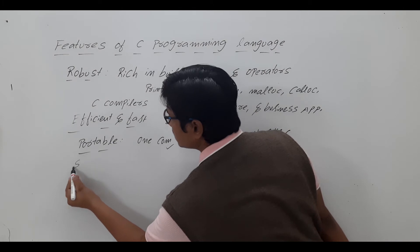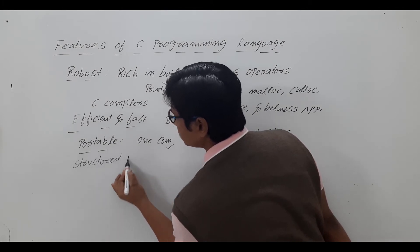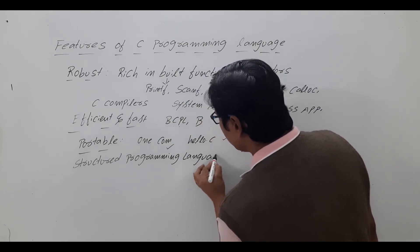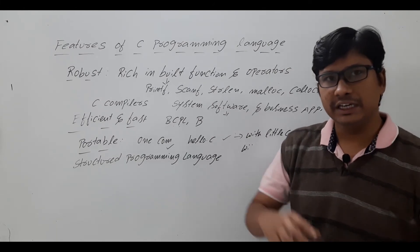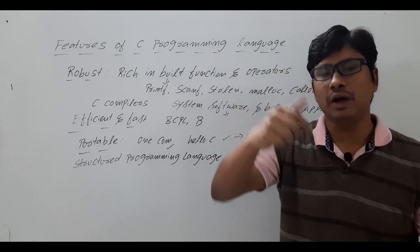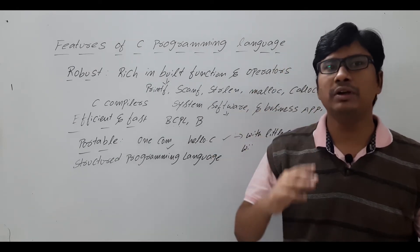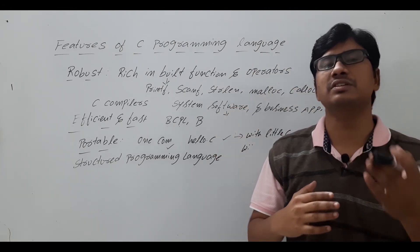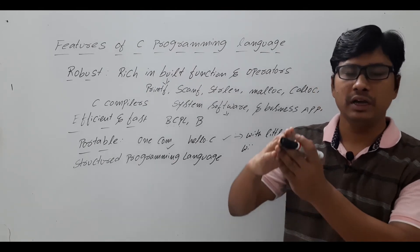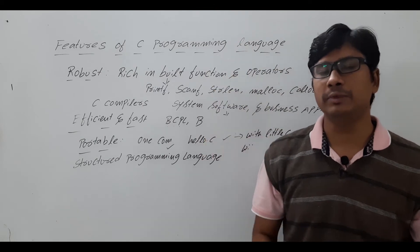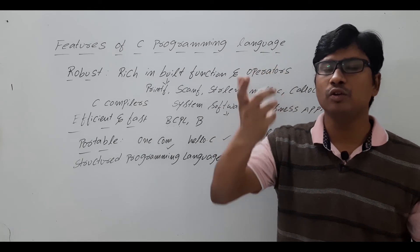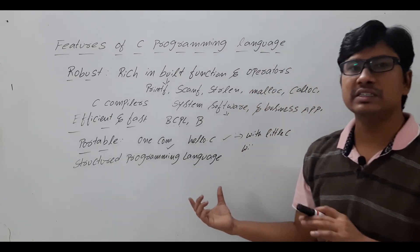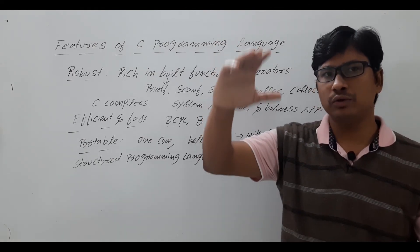Another important feature is that C is a structured programming language. It has a specific structure: you have the documentation section, the link section, the declaration section, global definition section, global declaration section, then the main function, and then the sub functions. In the next video I will discuss the entire structure of C programming language — what is the documentation section, link section, definition section, and global declaration section — all in detail. If you want to write any C program, you have to follow that structure.